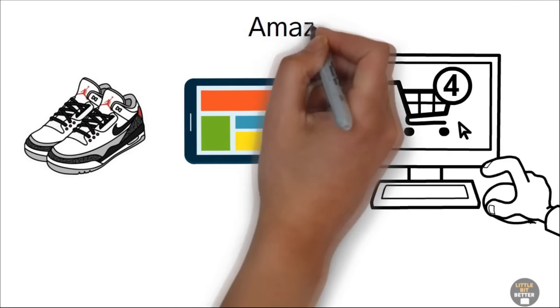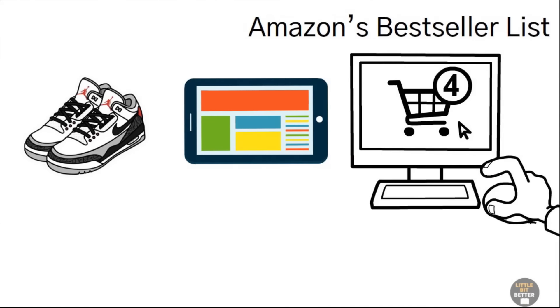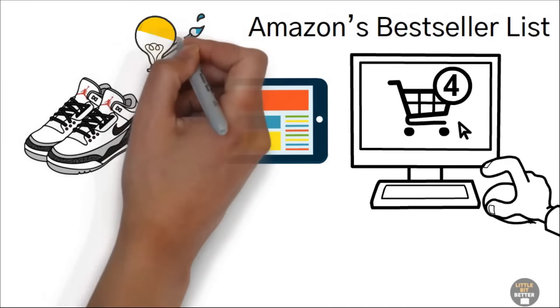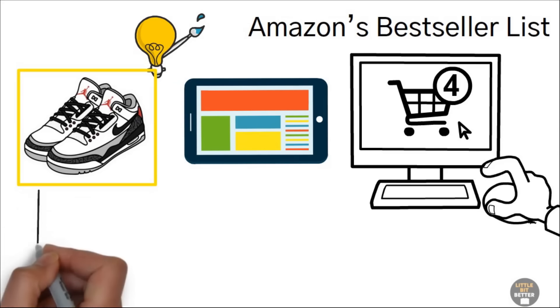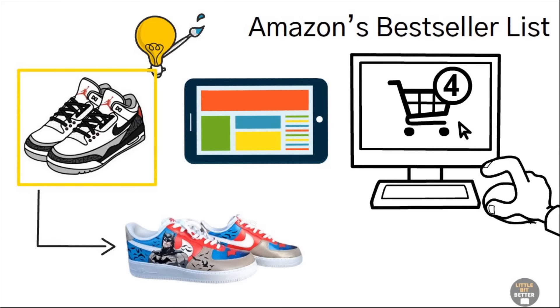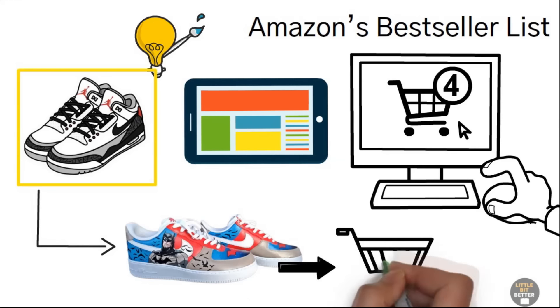Basically, any product you'd find on Amazon's bestseller list would work here. Now think, how can you accessorize the product? For example, Nike shoes are popular. Instead of trying to create your own shoe brand, you can make custom-painted Nike shoes that are unique and never found in stores.